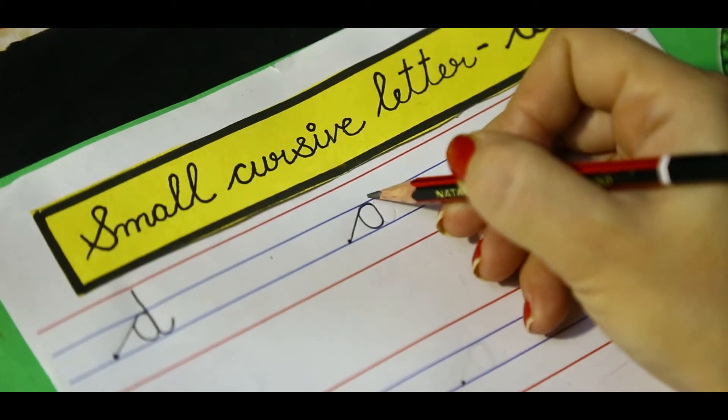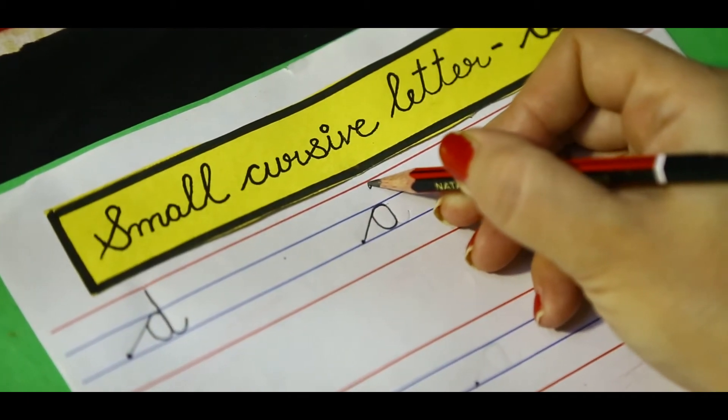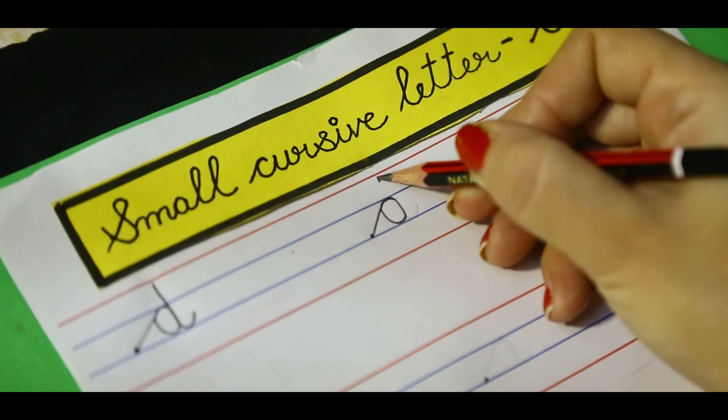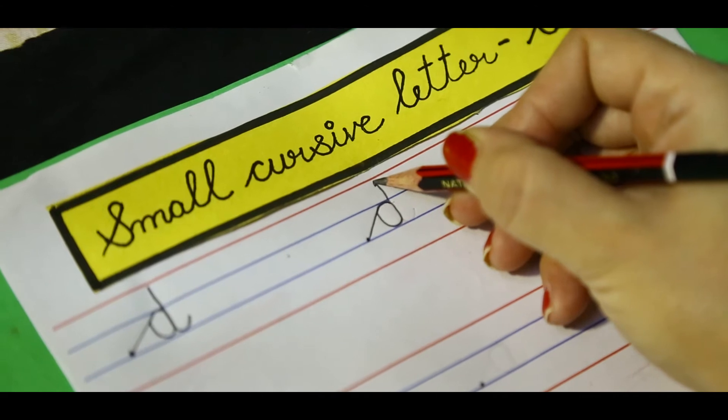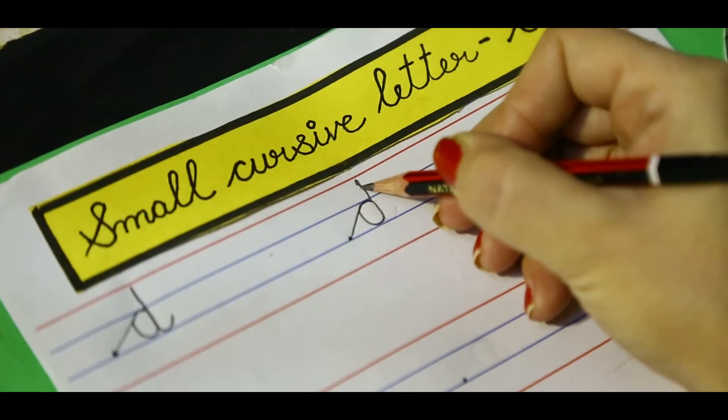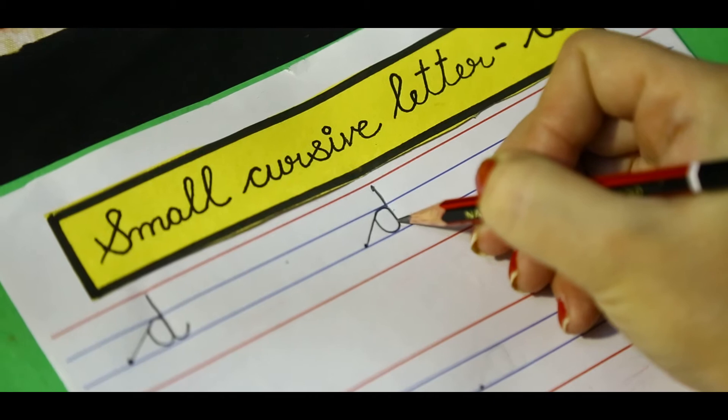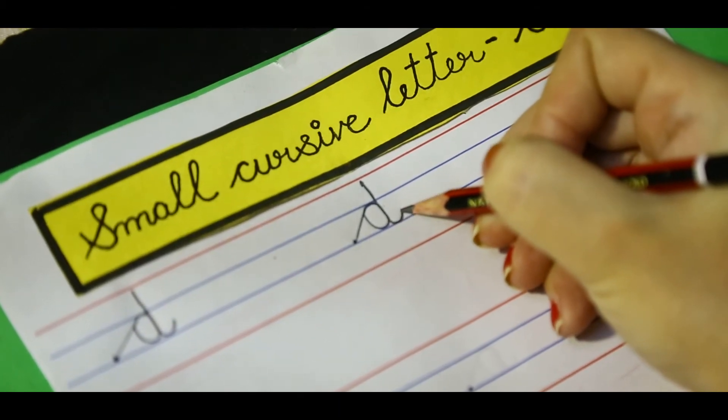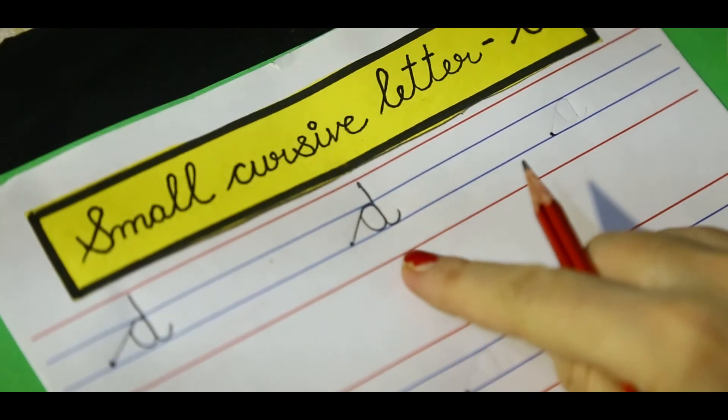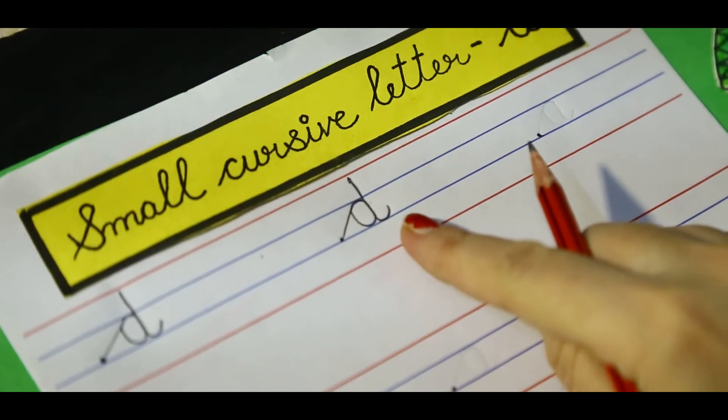You have to go towards the top red line. Go up towards the top red line. Go back, go back to the same blue line and a little tail. This is small cursive D.